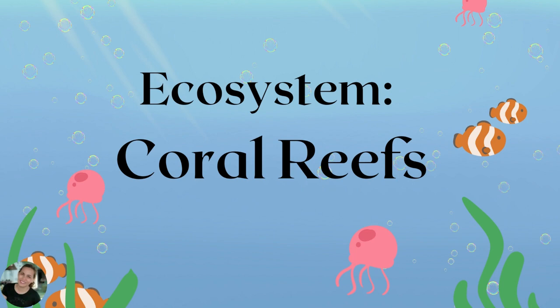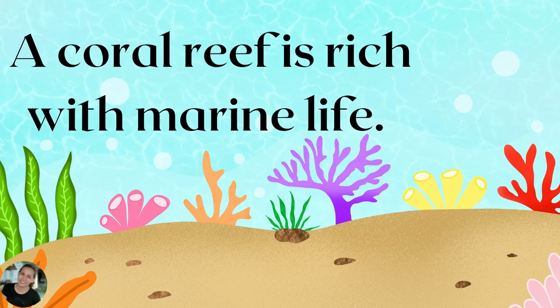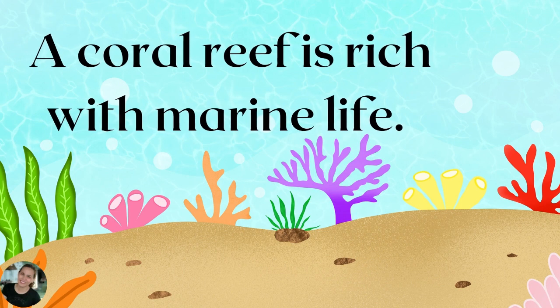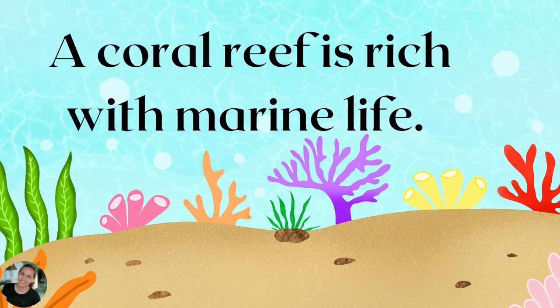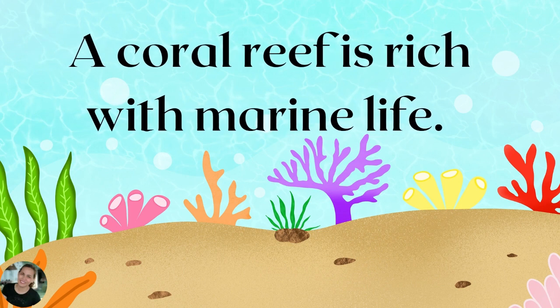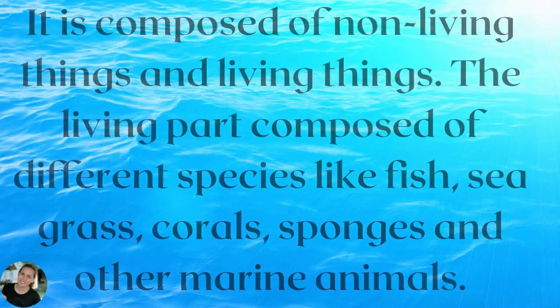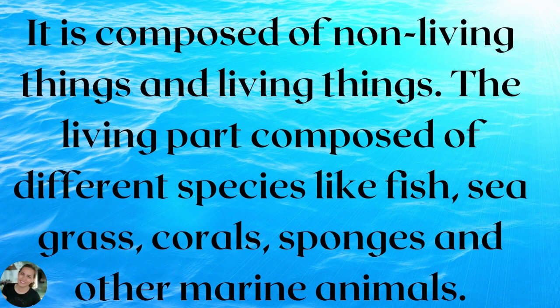Our lesson for today is all about the ecosystem of coral reefs. First, what is a coral reef? A coral reef is rich with marine life. It is composed of living things and non-living things. The living part is composed of different species like fish, seagrass, corals, and other marine animals.